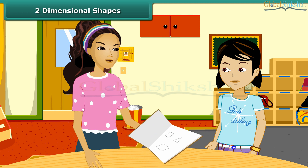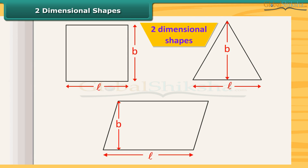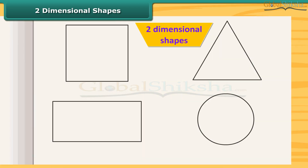Look at these shapes. These are all two-dimensional shapes. They have only two measurements: length and breadth. All the shapes that we draw in our notebook are two-dimensional? Yes, you are right. All those shapes that we can draw on paper and which have only two measurements are two-dimensional shapes.